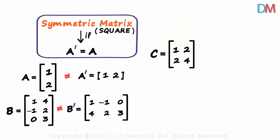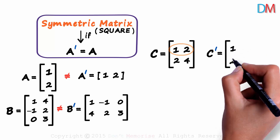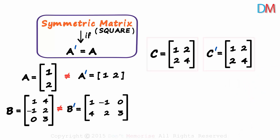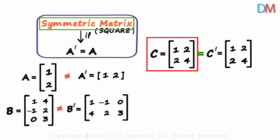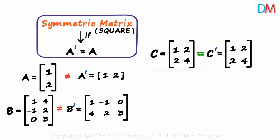Take matrix C for instance — two rows and two columns. This is a square matrix because its number of rows is equal to its number of columns. Is this a symmetric matrix? We find C transpose to know the answer. The first row becomes the first column and the second row becomes the second column. Clearly the two matrices are equal — same order and corresponding elements are equal: 1 and 1, 2 and 2, 2 and 2, 4 and 4. Matrix C is a symmetric matrix as its transpose is equal to itself.